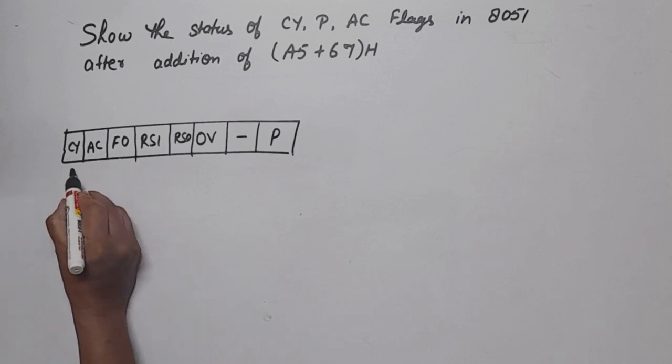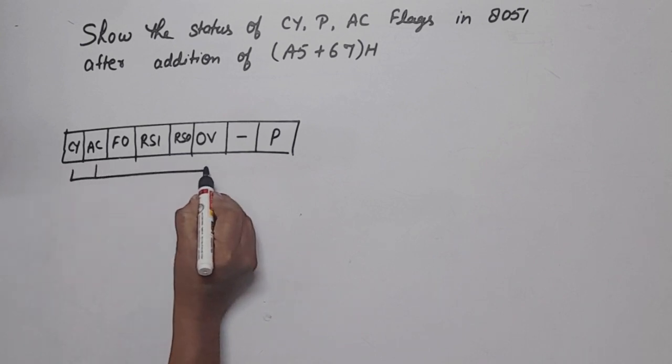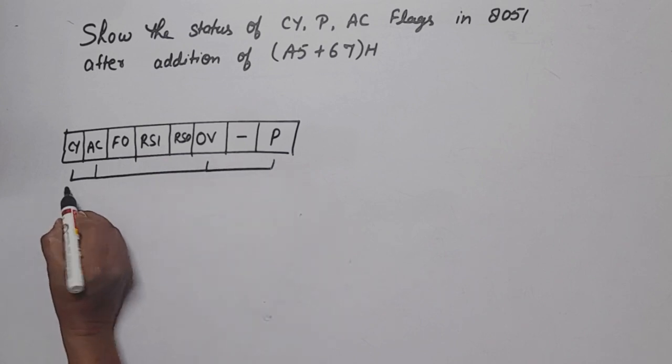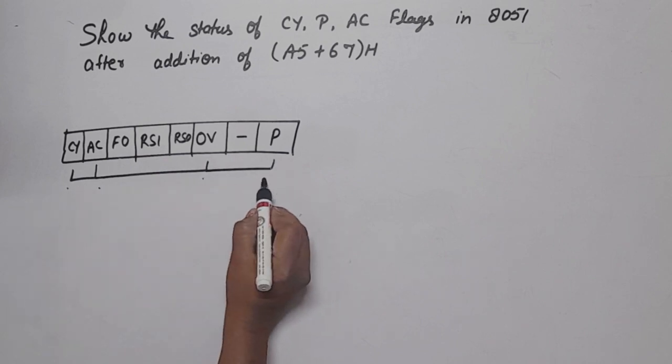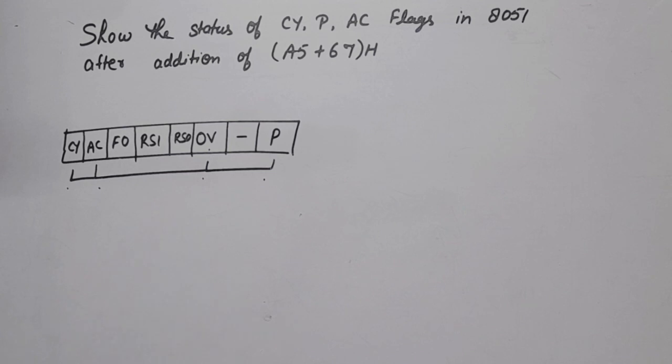What are our conditional flags? There are 4: carry flag, auxiliary carry, overflow, and parity. Overflow is used for signed numbers, so that's why only carry flag, auxiliary carry, and parity flag are asked. Overflow is not asked, and the register bank select is user defined, meaning it's unconditional.